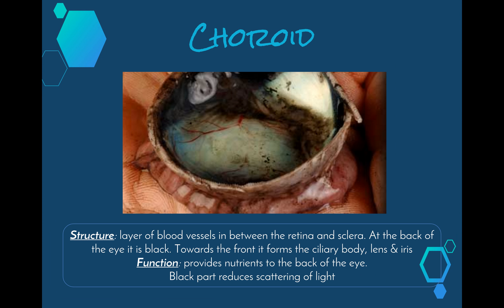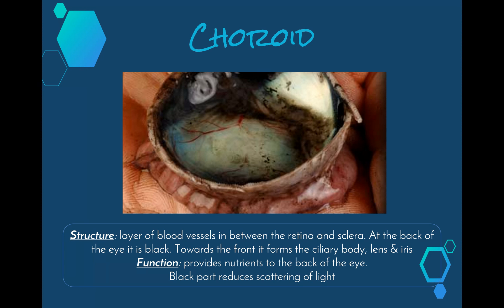Next we have the choroid layer, which is a layer of blood vessels in between the retina and the sclera. It is found at the very back of the eye and appears black. Towards the front it forms the ciliary body, our lens, and our iris. Its job is to provide nutrients to the back of the eye, and the black part helps to reduce the scattering of light. Since a black object absorbs light, the choroid helps absorb light so it's not bouncing off the inside of our eye and making our vision blurred.